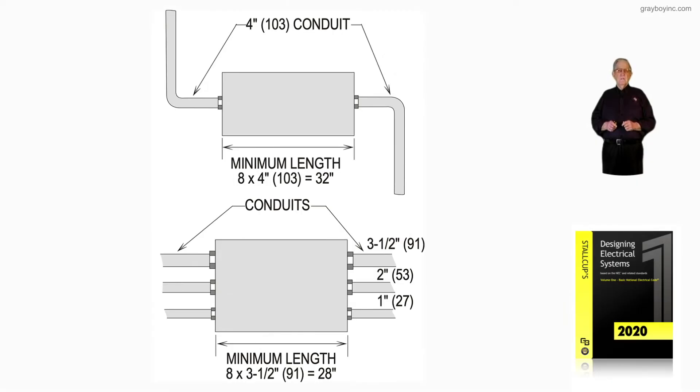This illustration now deals with a straight pull. I would like to point out that the conductor sizes now are number four or larger, not number six or smaller, or we'd be using the table 314.16A or B.